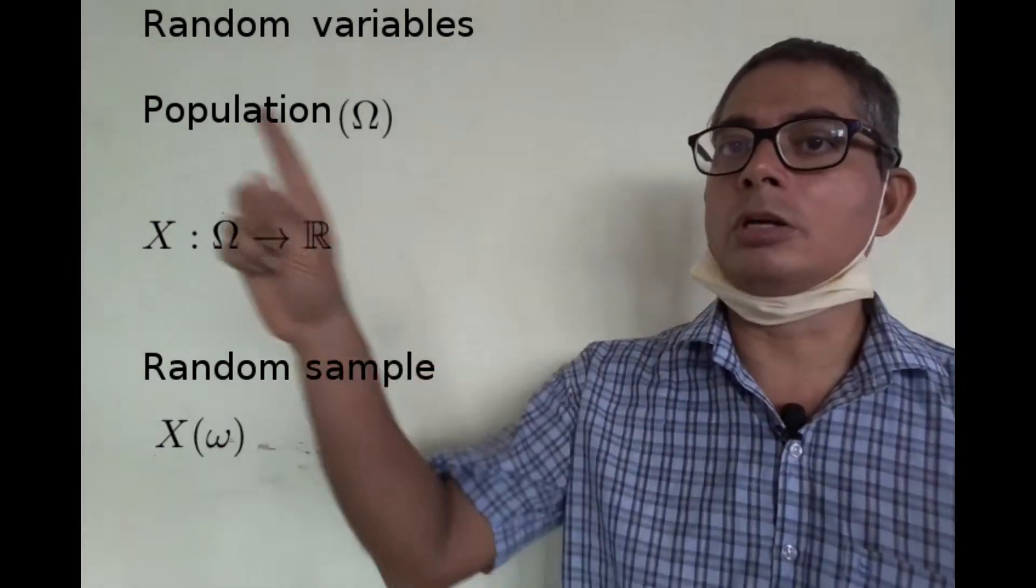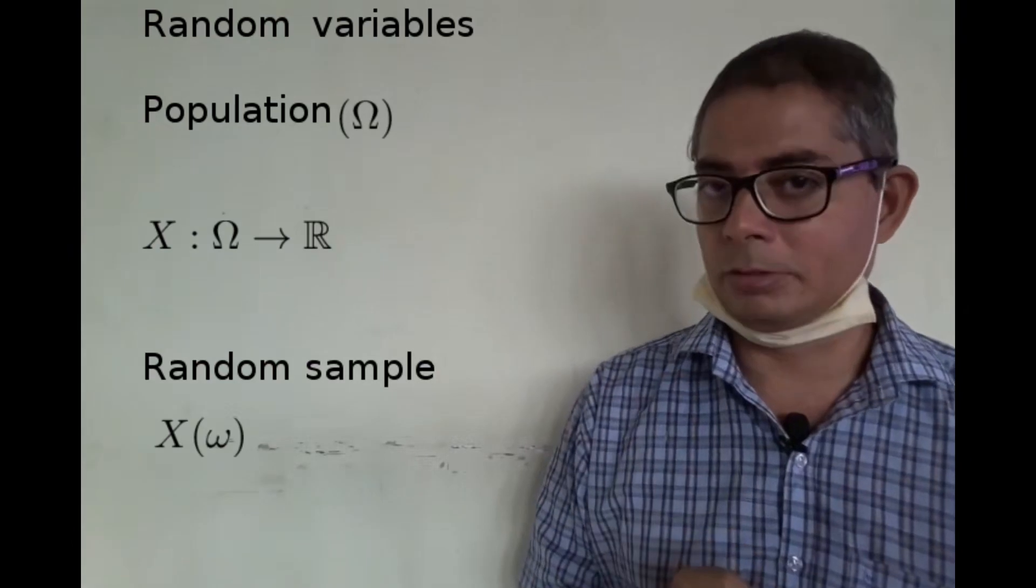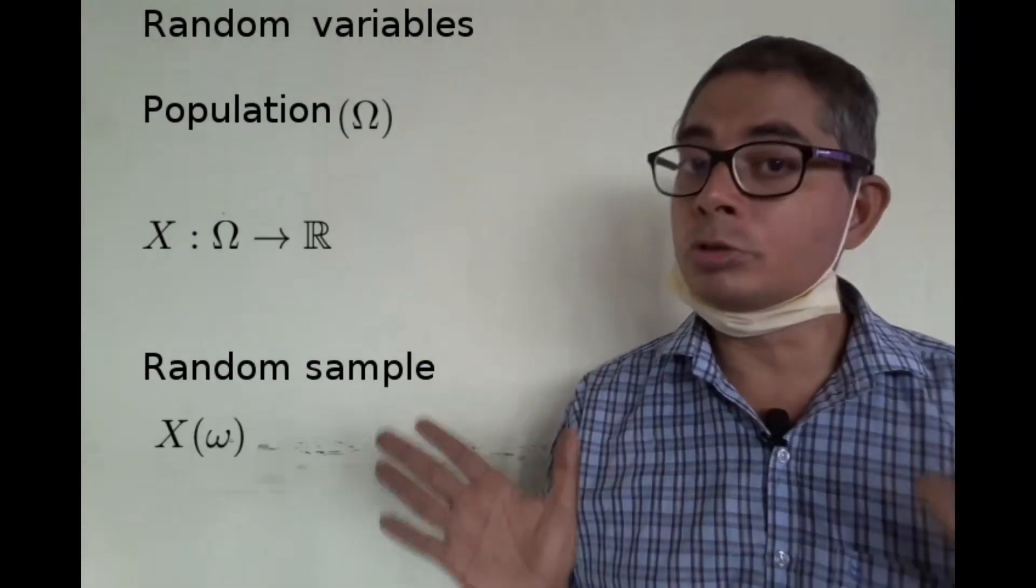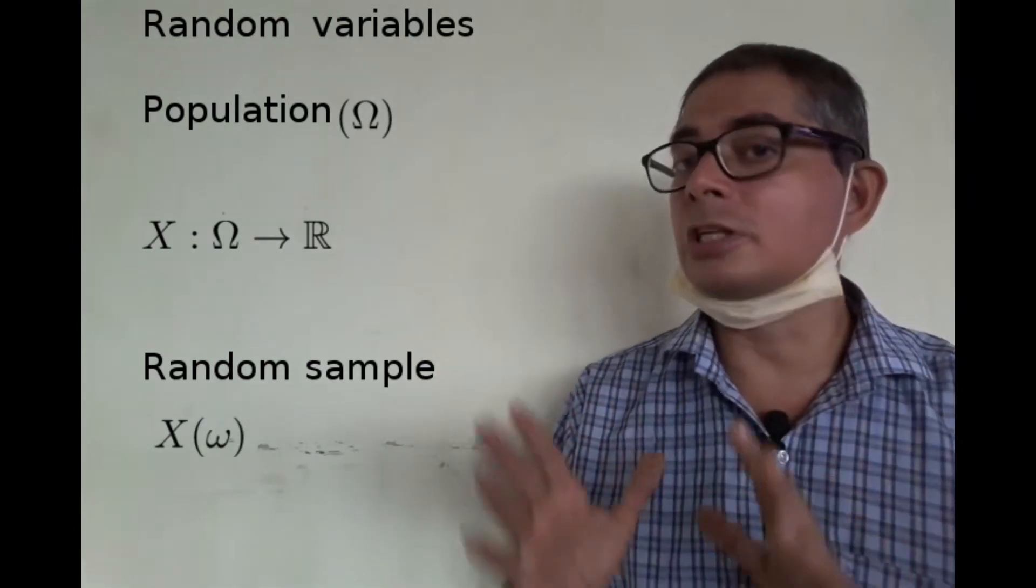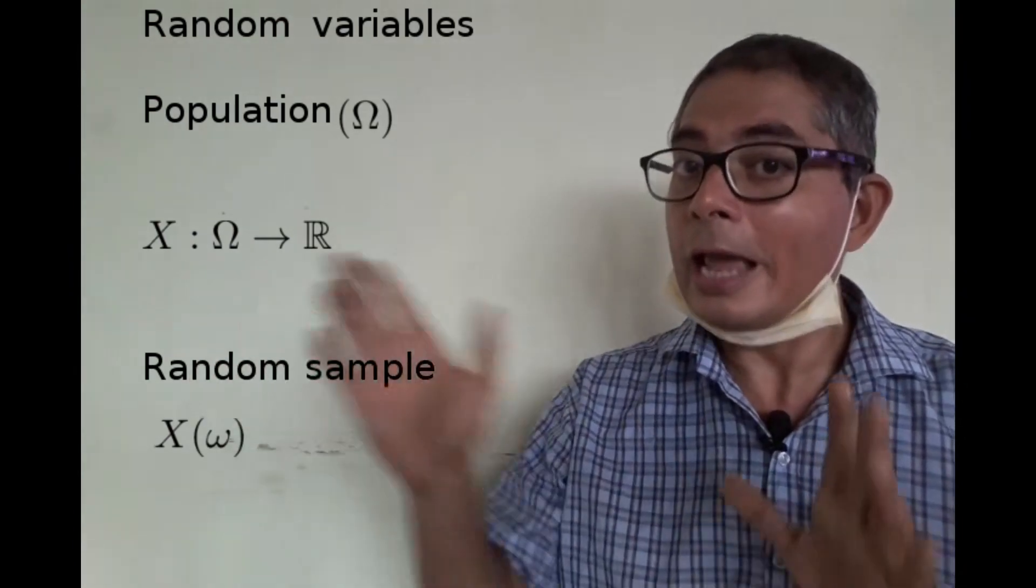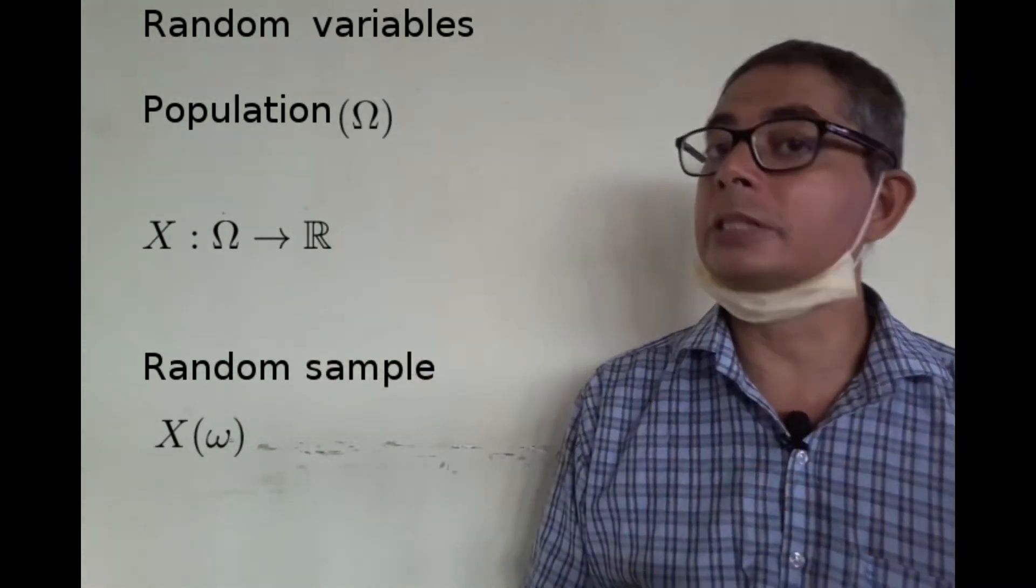This entire setup is called a random variable. It is made up of two things: a deterministic function on the population and a random sampling scheme.